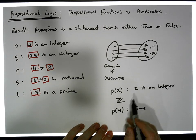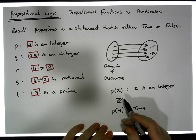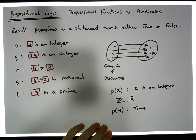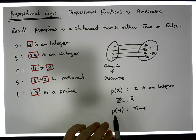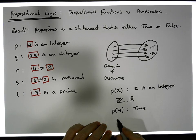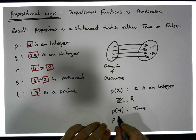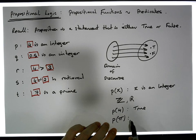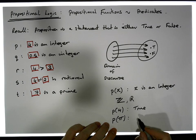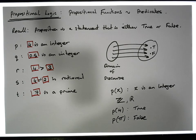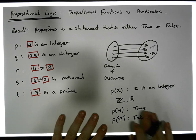Let's change the domain of discourse — instead of the integers, let's use the real numbers. We can still say p(4) is true since 4 is an integer and therefore a real number. But now we can also check something like p(π). In this case, we're asking: is π an integer? That is false — π is not an integer; it's an irrational number.